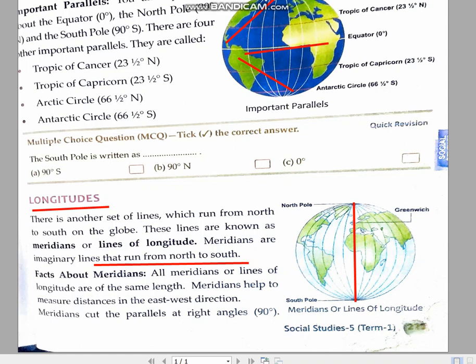But when we talk about meridians, all the meridians start from the north pole and they reach to the south pole and they are of equal length.